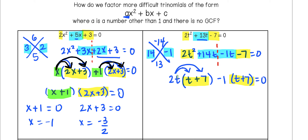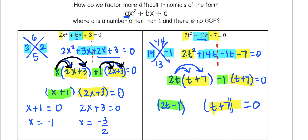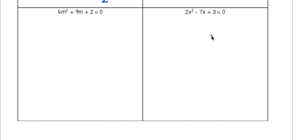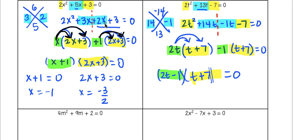Our final step is to look at what we've distributed: we took 2t distributed to t plus 7, and negative 1 distributed to t plus 7. Since we're taking those two separate terms and distributing to the same binomial, our two binomials become (2t minus 1)(t plus 7), both equal to 0. Setting each equal to 0, we get t equals 1 half and t equals negative 7 as our two solutions.